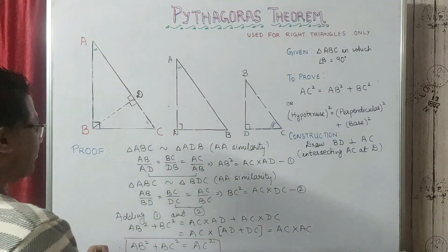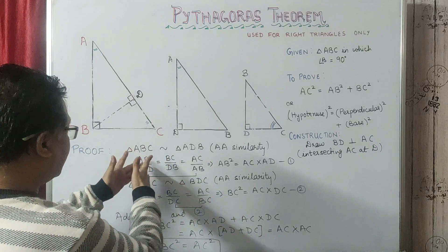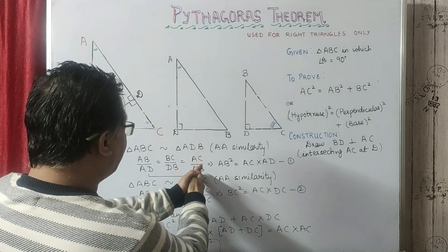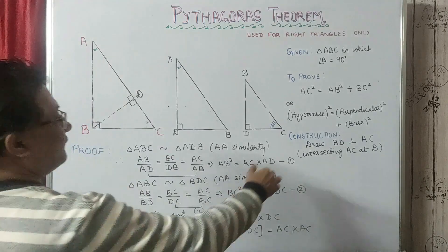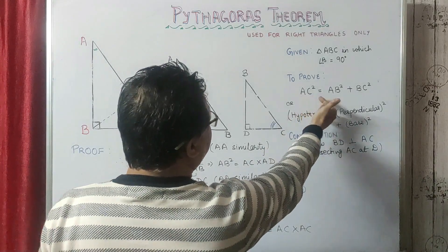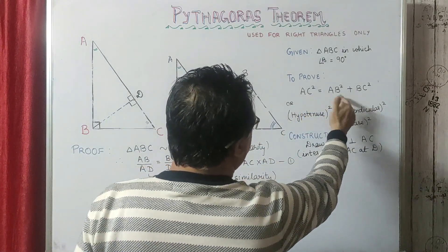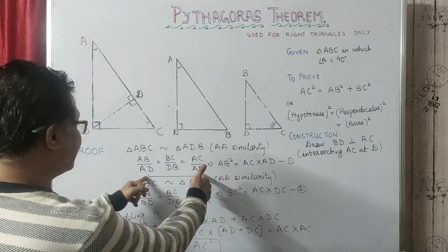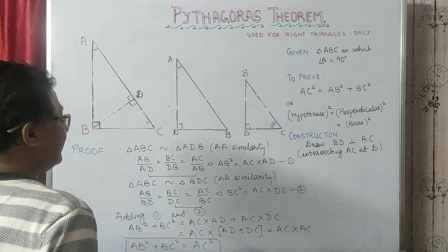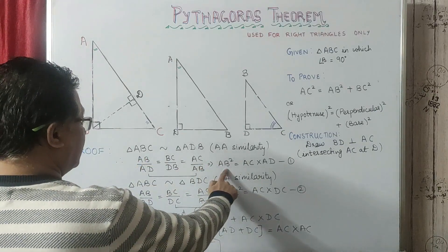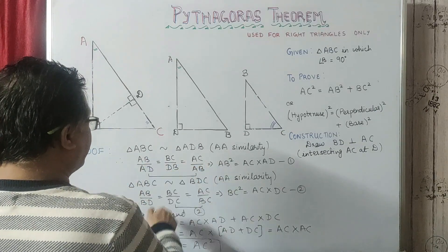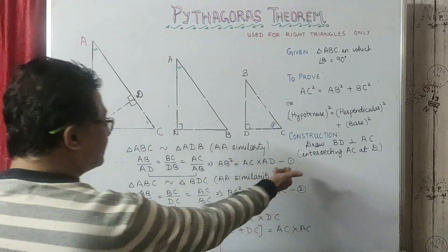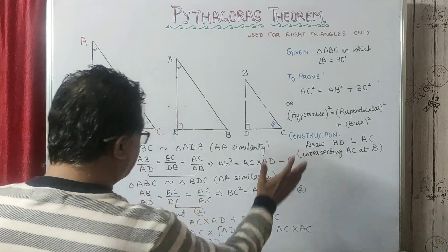We consider AB over AD and AC over AB because we need to find the value of AB squared. Therefore, cross-multiplying these two gives us AB squared equals AD into AC. This is our equation number 1.